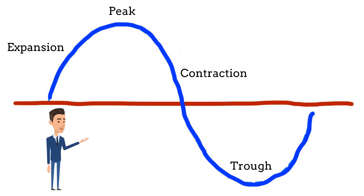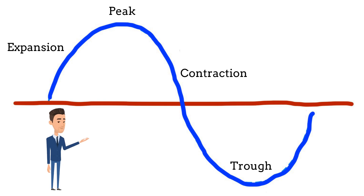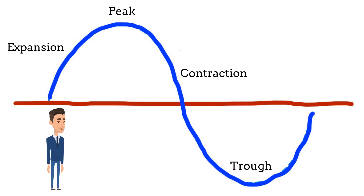Trough — this is the phase where economic activity reaches its lowest point, and the economy is operating at a minimum level of output. In this phase, businesses may be struggling to stay afloat, and consumer demand may be at its lowest. And after this it starts recovering.